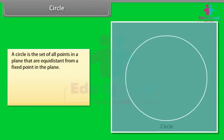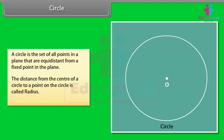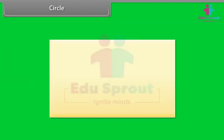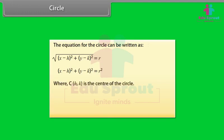A circle is the set of all points in a plane that are equidistant from a fixed point in the plane. The distance from the center of a circle to a point on the circle is called the radius. The equation for the circle can be written as: where (h, k) is the center of the circle, r is the radius of the circle, and (x, y) is a point on the circle.